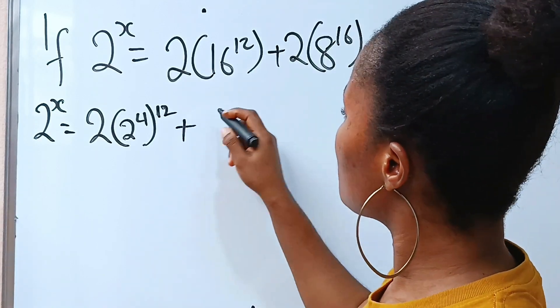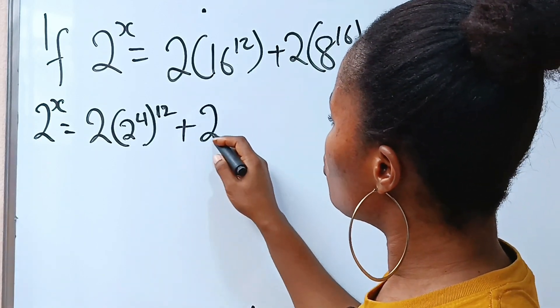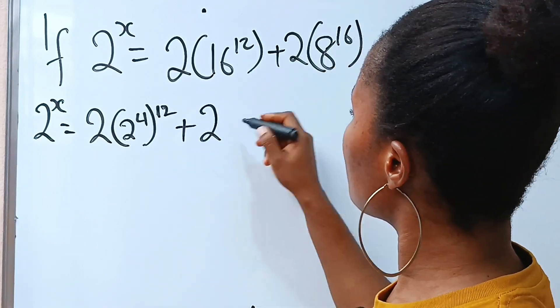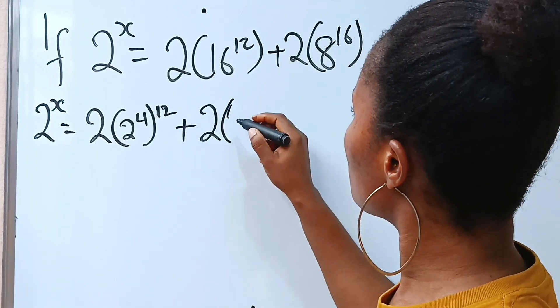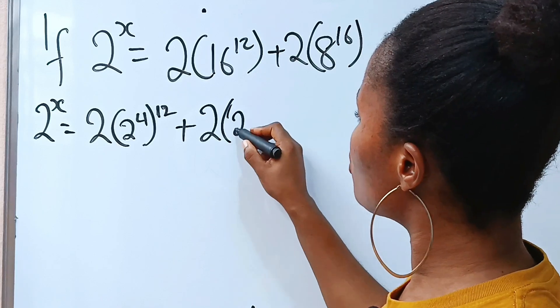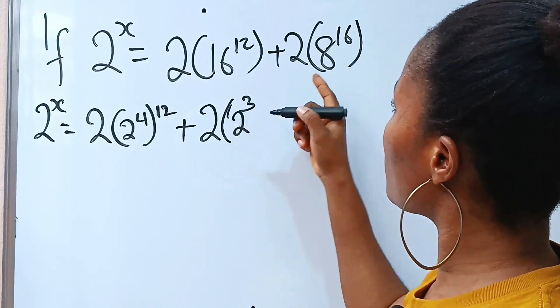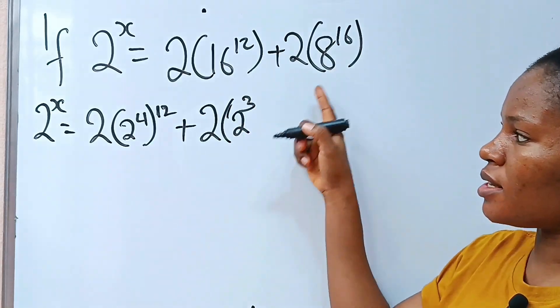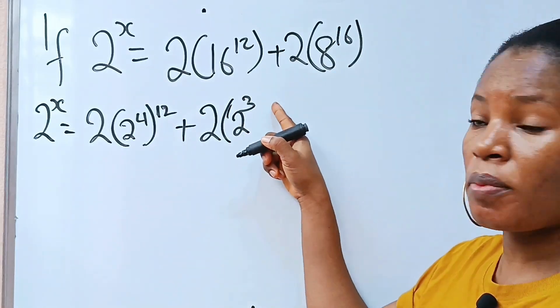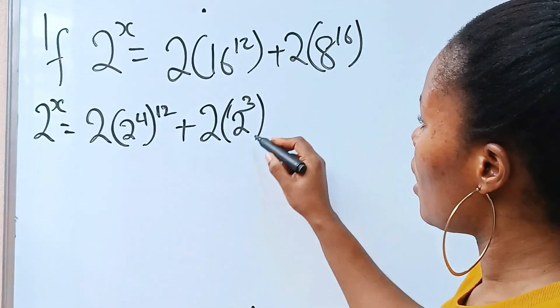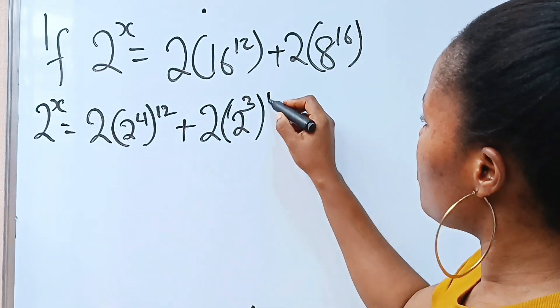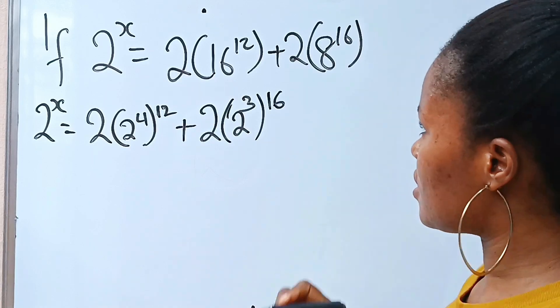Plus, this 2 and 8 is written as what? 2 to the power of 3 — that is 8 is written as 2 to the power of 3 — then raised to the power of 16.